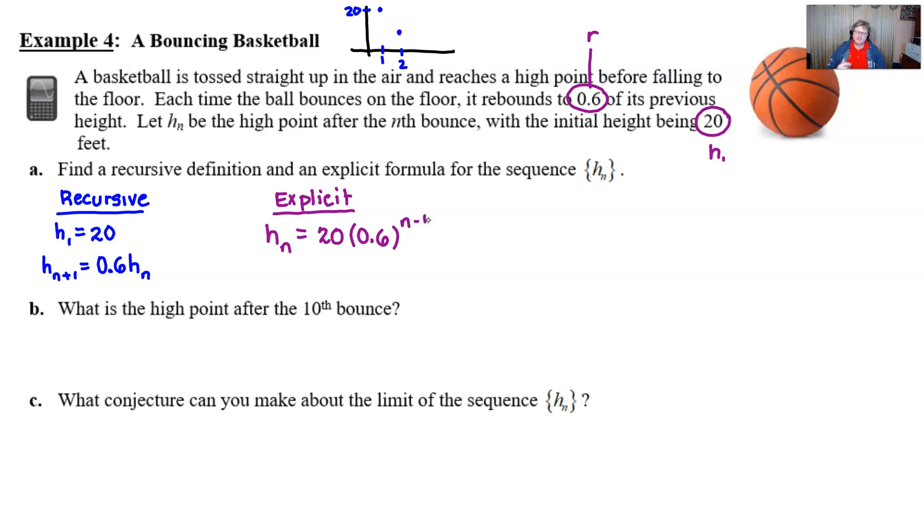It's really important that you have the minus 1 because if n were equal to 1, it basically wipes out this 0.6 because of the power being 0, and you get that first height of 20 like you're supposed to. So we've got our explicit. Now once you have the explicit form, finding the high point after the 10th bounce becomes fairly easy because we just simply need to take our n equal 10, n is the number of bounces, and we simply plug that in for our n. And we have n minus 1, 10 minus 1, which is 9.